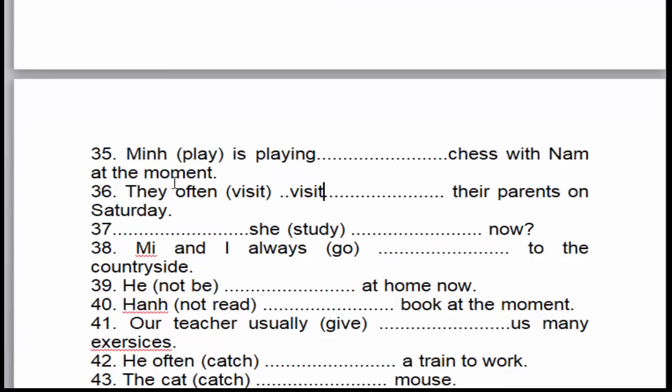Câu số 37: 'She is... now.' 'Now' là dấu hiệu nhận biết của thì hiện tại tiếp diễn, ở thể nghi vấn. 'She' là chủ ngữ số ít, cho nên chúng ta sử dụng to be là 'is', cộng động từ thêm '-ing'.